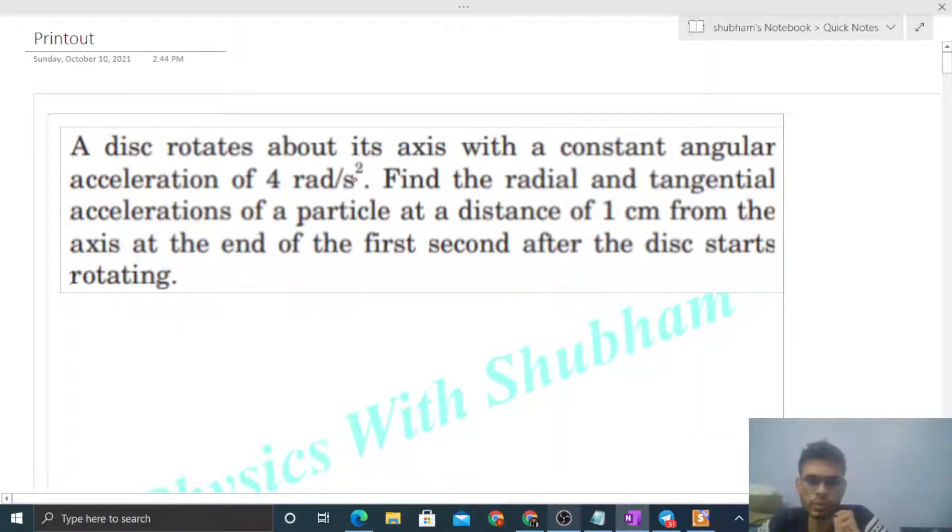It says a disk rotates about its axis with a constant angular acceleration of 4 radian per second square. Find the radial and tangential accelerations of a particle at a distance of 1 centimeter from the axis at the end of the first second after the disk starts rotating.